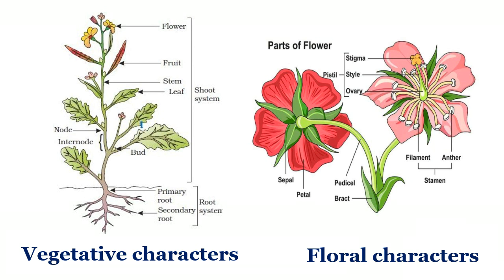Morphological characters can be divided into two types: vegetative characters of root, stem and leaves, and floral characters where we include bract, pedicel, sepal, petal, androecium and gynoecium. These are broadly two categories for morphological studies.